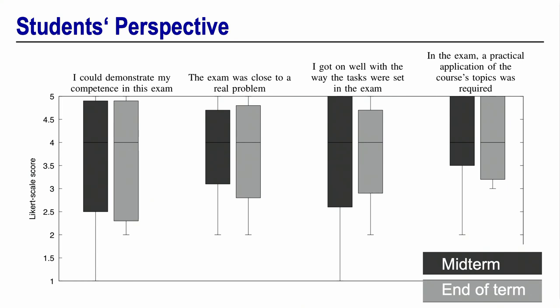In the evaluation, we also try to find out students' perspective on this kind of exam, and we find that they are quite happy with this kind of exam. So here you see box plots for the distribution of students' answers on a Likert-like scale, ranging from 1, I do not agree, to 5, I do completely agree. And we have the four items: I could demonstrate my competence, the exam was close to a real problem, I got on well with the way the tasks were set in the exam, and in the exam a practical application of the course's topics was required.